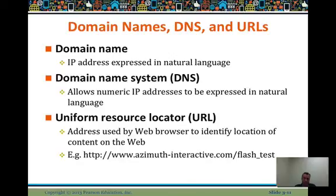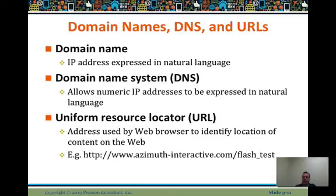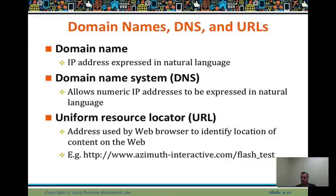Some terms important for internet business and e-commerce in particular: the domain name is the IP address expressed in natural language — so Hofstra.edu, Amazon.com are domain names. The domain name system, DNS, allows numerical IP addresses like 201.666.345.227 to be expressed in natural language. The uniform resource locator, URL, is the address used by the browser — Chrome, Firefox, Internet Explorer, Safari — to identify the location of content on the web, such as azamuth-interactive.com/flashtest or amazon.com/Professor-Loudon's-e-commerce-textbook.